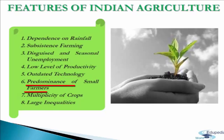The sixth feature is predominance of small farmers. In India, the majority of farmers are either small or marginal. Rapidly rising population leads to subdivision and fragmentation of land holdings, and consequently farmers cultivate on very small pieces of land. Besides, there are landless laborers who work on others' land.